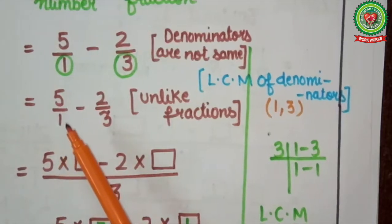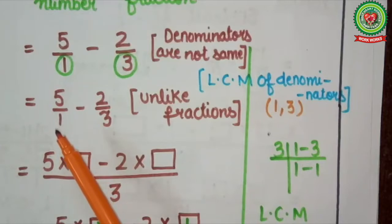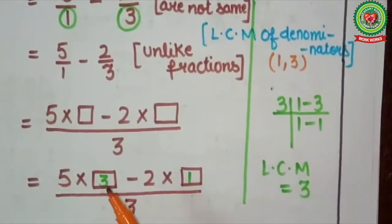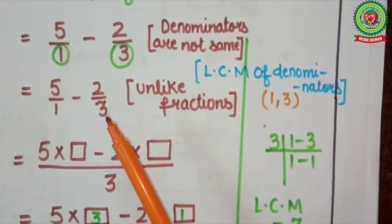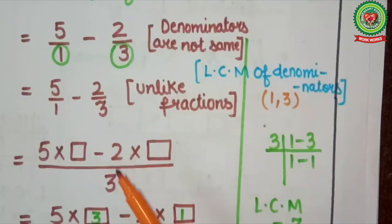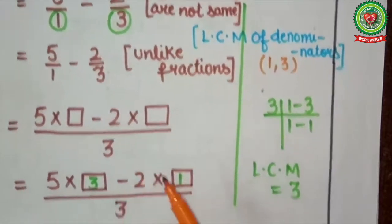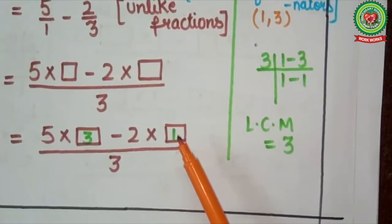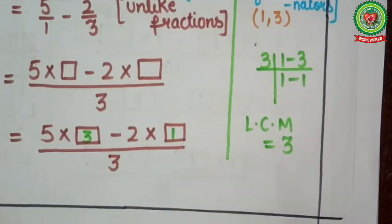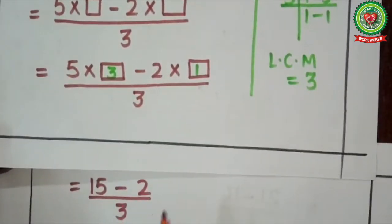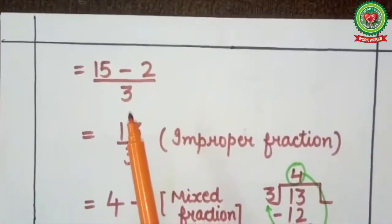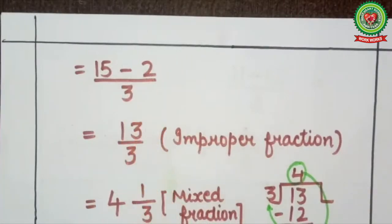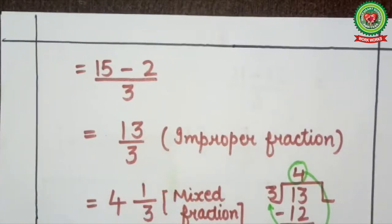Check the first fraction: denominator is 1, so in the table of 1, 3 will come at 3. In the first box I will put 3. Check the second fraction: denominator is 3, so in the table of 3, 3 will come at 1. In the second box I will put 1. Now first multiply, then subtract. 5 threes are 15, so first will come 15. And 2 ones are 2. So here I will write 15 minus 2 upon 3. 15 minus 2 equals 13, so here it is coming 13 upon 3.